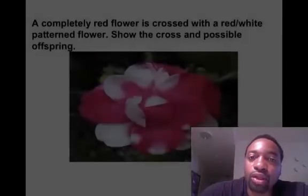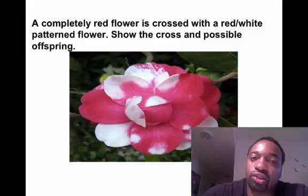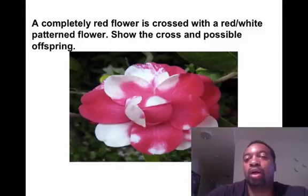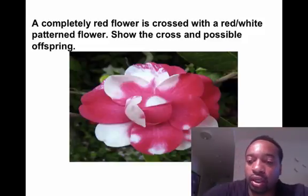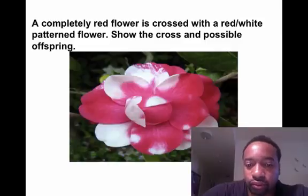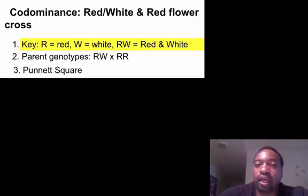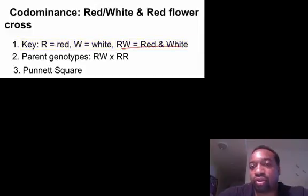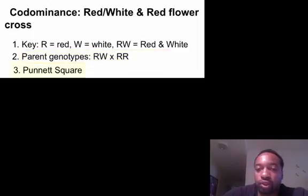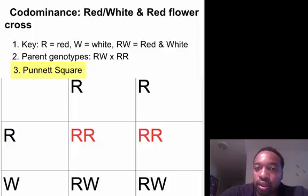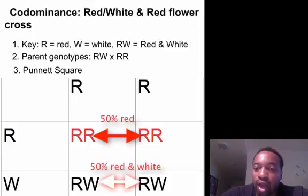Let's do another problem. A completely red flower is crossed with a red-and-white patterned flower. Show the cross and the possible offspring. We set up our key using the preferred method: big R is red, big W is white, and big R big W — the heterozygote — is red and white. When there's something going on with the heterozygote, don't just write the key with the two separate alleles; also write out the heterozygote. The parent genotypes are big R big W and big R big R. We set up our Punnett square.